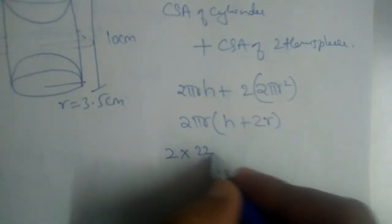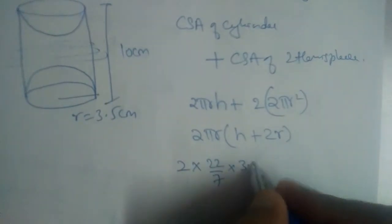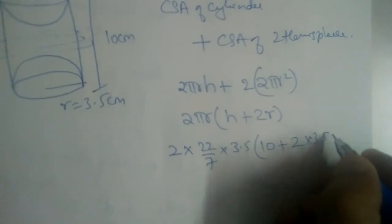So let us substitute the values: 2 × 22/7 is π, what is r? 3.5. And what is the value of h? It is 10 plus 2 × 3.5.